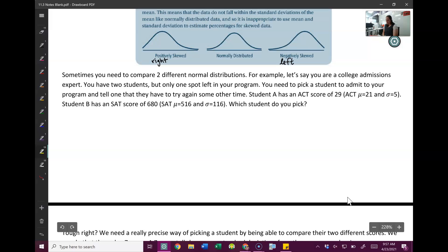So all I know is that student A has an ACT score of 29 and then I've included the mean and the standard deviation of the ACT, and I know that student B has an SAT score of 680 and I've included the mean and the standard deviation of the SAT and I need to pick a student. Well obviously I'm gonna want the student who scored higher who did better. They're probably a better student to have in my program. So I need to be able to look at these scores and figure out who did better.